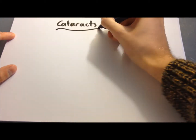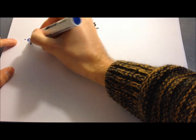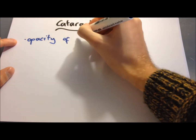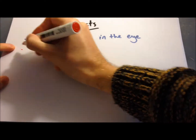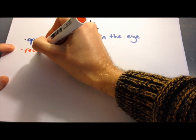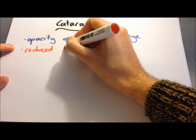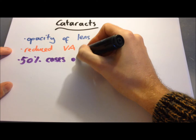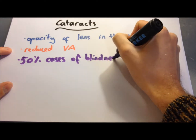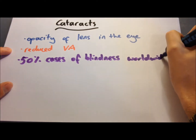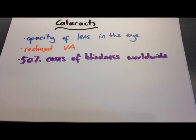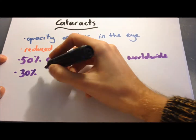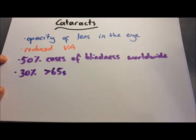So what is a cataract? A cataract is an opacity of the lens in the eye — a clouding of it — which leads to reduced visual acuity. Around 50% of cases of blindness around the world are caused by age-related cataracts, and 30% of people in the UK aged 65 or over have at least one cataract that leads to visual impairment.